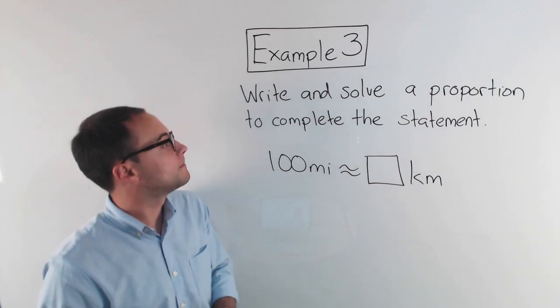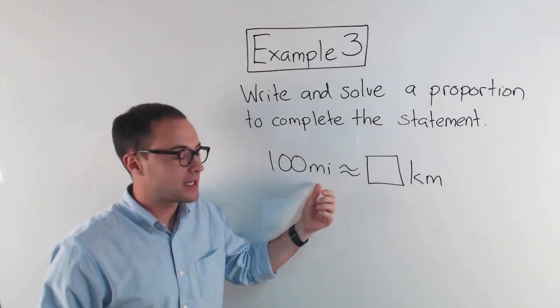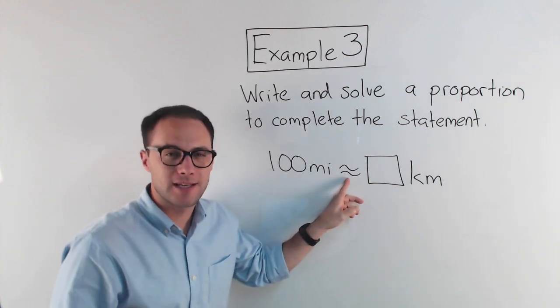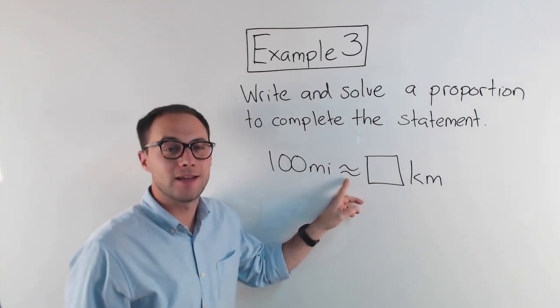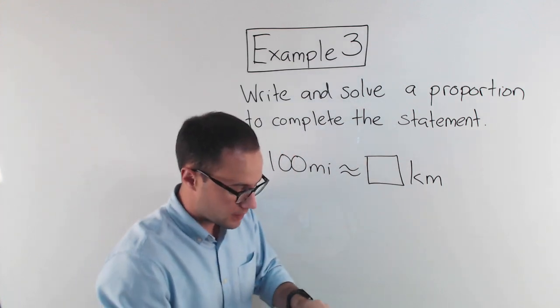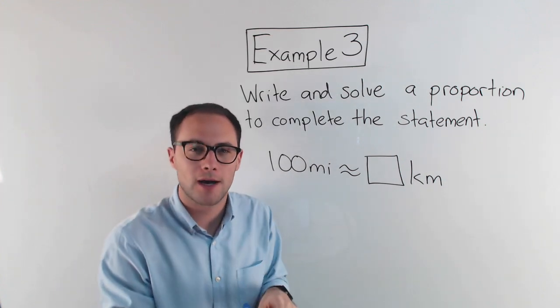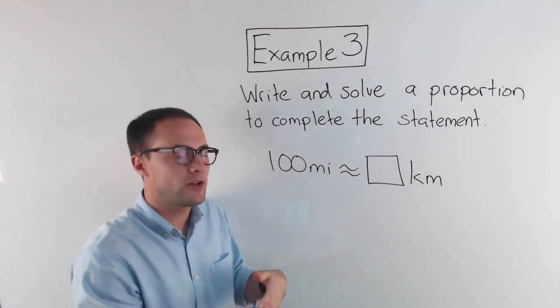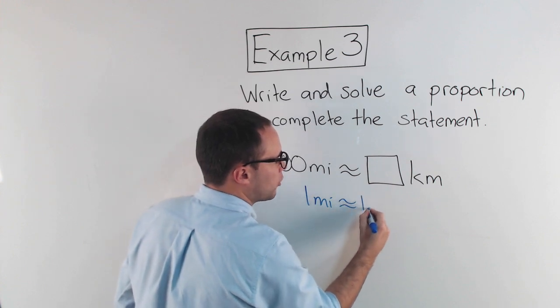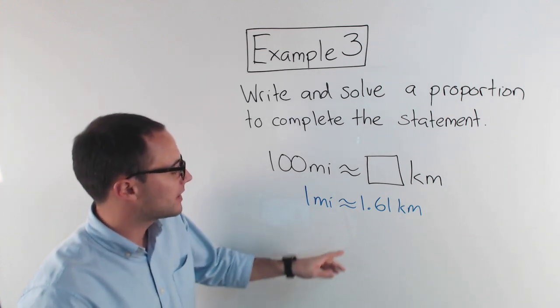Here's our last example. Write and solve a proportion to complete this statement. So 100 miles, that's the abbreviation for miles, is approximately. Notice it's not an equal sign. This sign, kind of the wave-looking one, means approximately. It's approximately how many kilometers? Well, we need to know a little bit more information to solve this. And if you Google unit conversions or something like that, you'll be able to find out that one mile is approximately 1.61 kilometers. That's rounded. That's not an exact number. That's why I wrote it approximately.